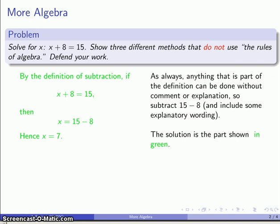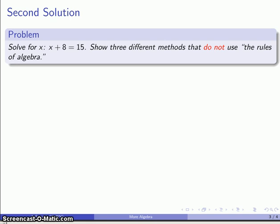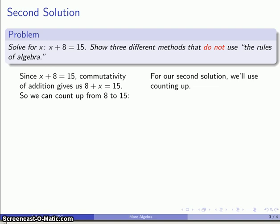Well how about a second solution? Again, not using the rules of algebra. And so here we might use the method of counting up. And so we might consider the problem this way. Since x plus 8 equals 15, then by the commutativity of addition we have 8 plus x equals 15. And so I can count up from 8 some amount until I get to 15.